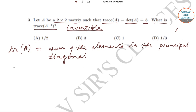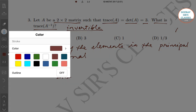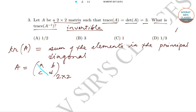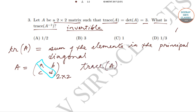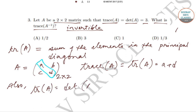For sake of simplicity, we'll assume A to be a general 2×2 matrix of the form [a, b; c, d]. The principal diagonal elements give us tr(A) = a + d. It has also been given that the trace of A equals the determinant of A equals 3, which implies that a + d = 3.